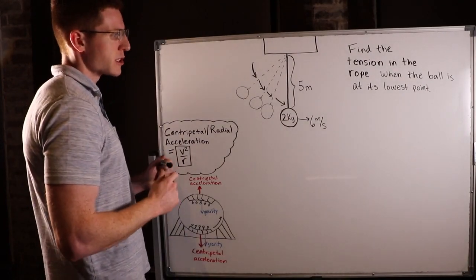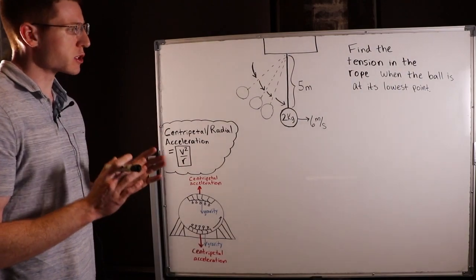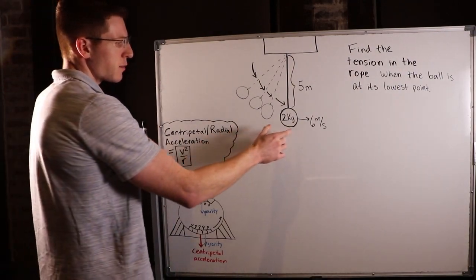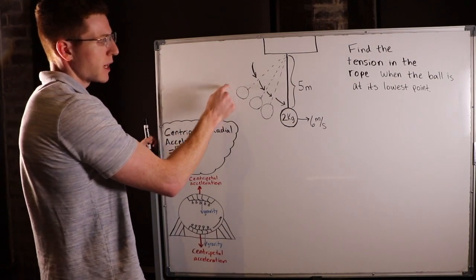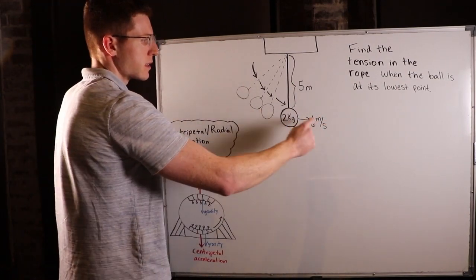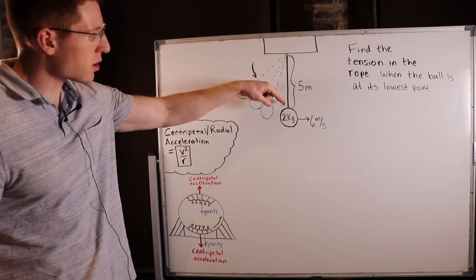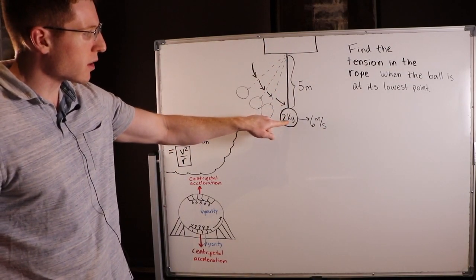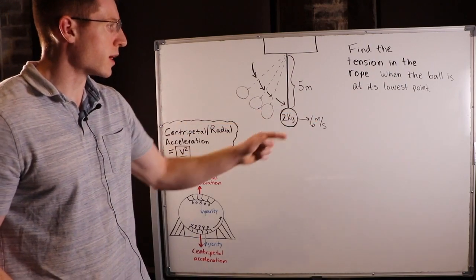Hey guys, I've got a problem for us here. I want you to find the tension in the rope when the ball is at its lowest point. Imagine I've got a ball that I wound up to here and then let it go in a pendulum motion and started swinging like this. The rope that attached the ball to the ceiling was 5 meters long, the ball weighed 2 kilograms, and at its lowest point it was going 6 meters per second this way.